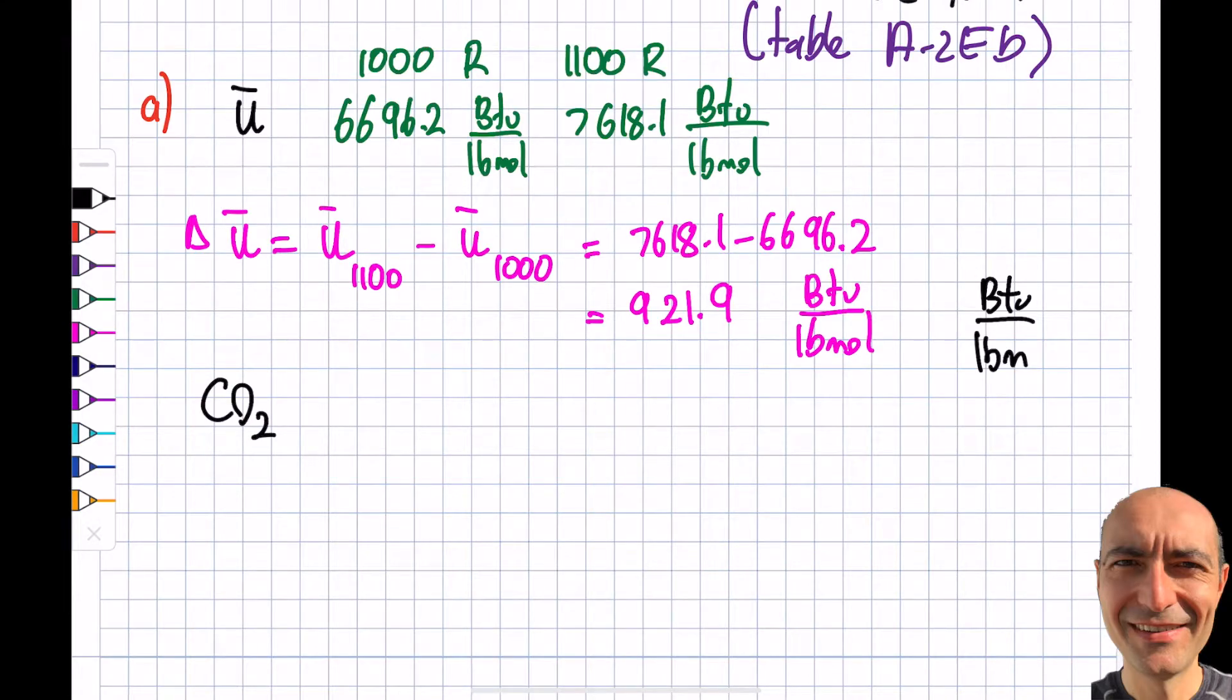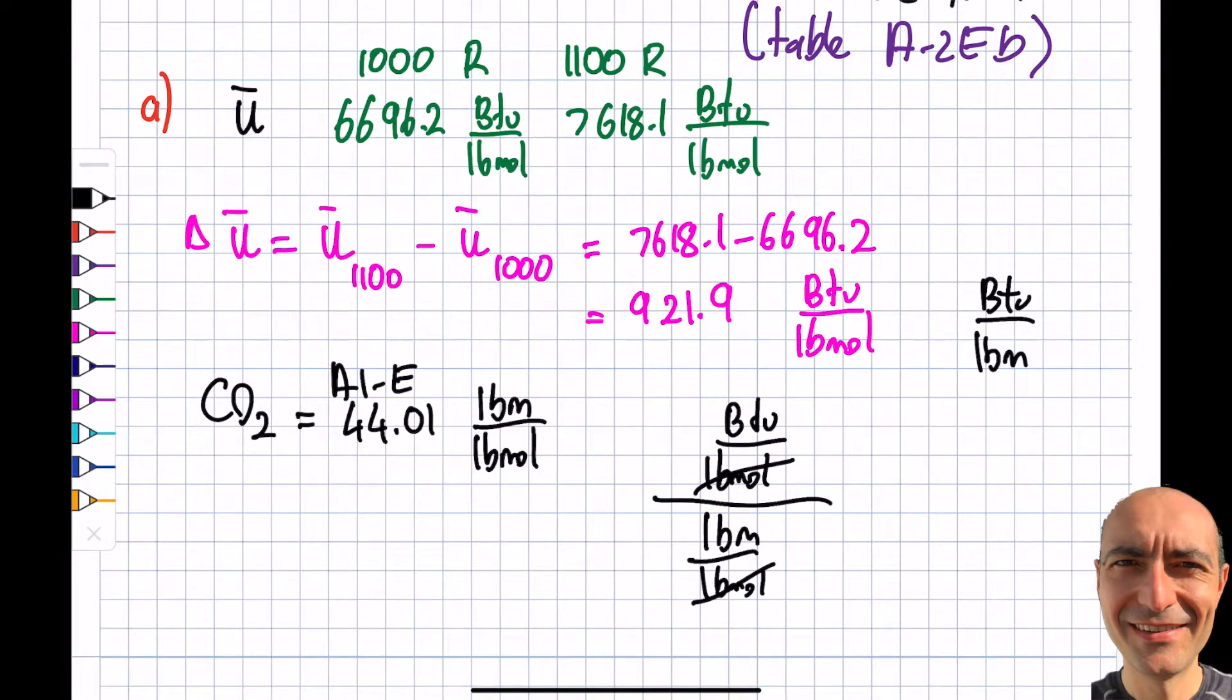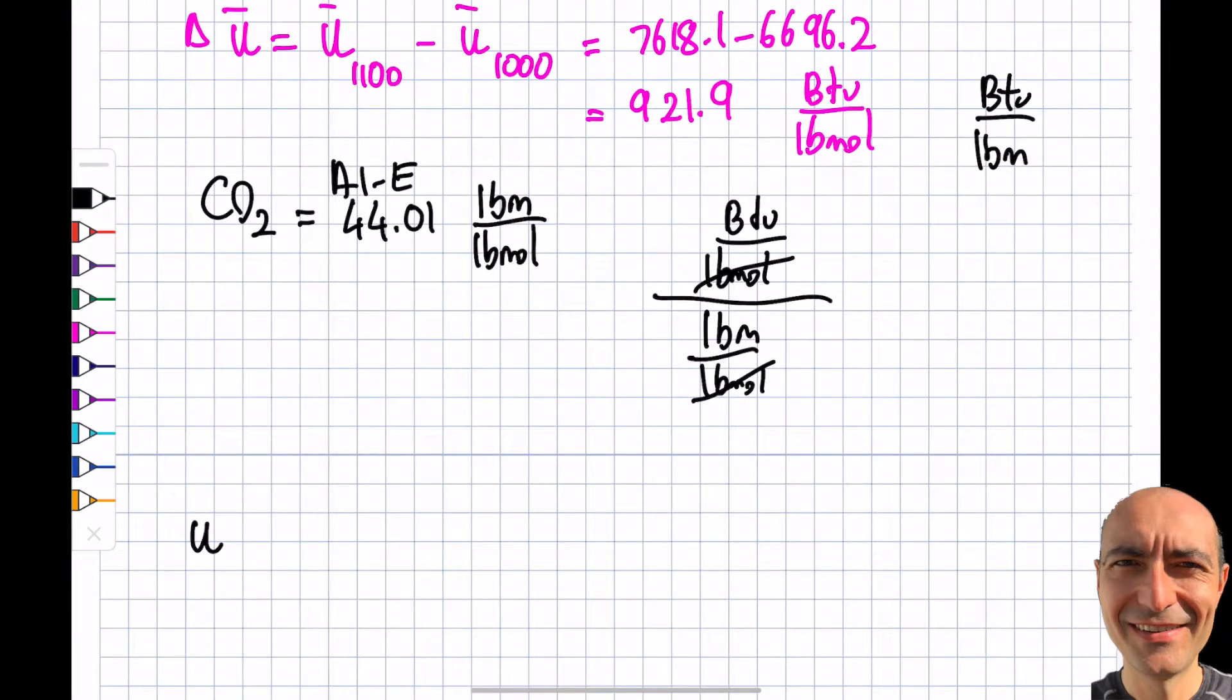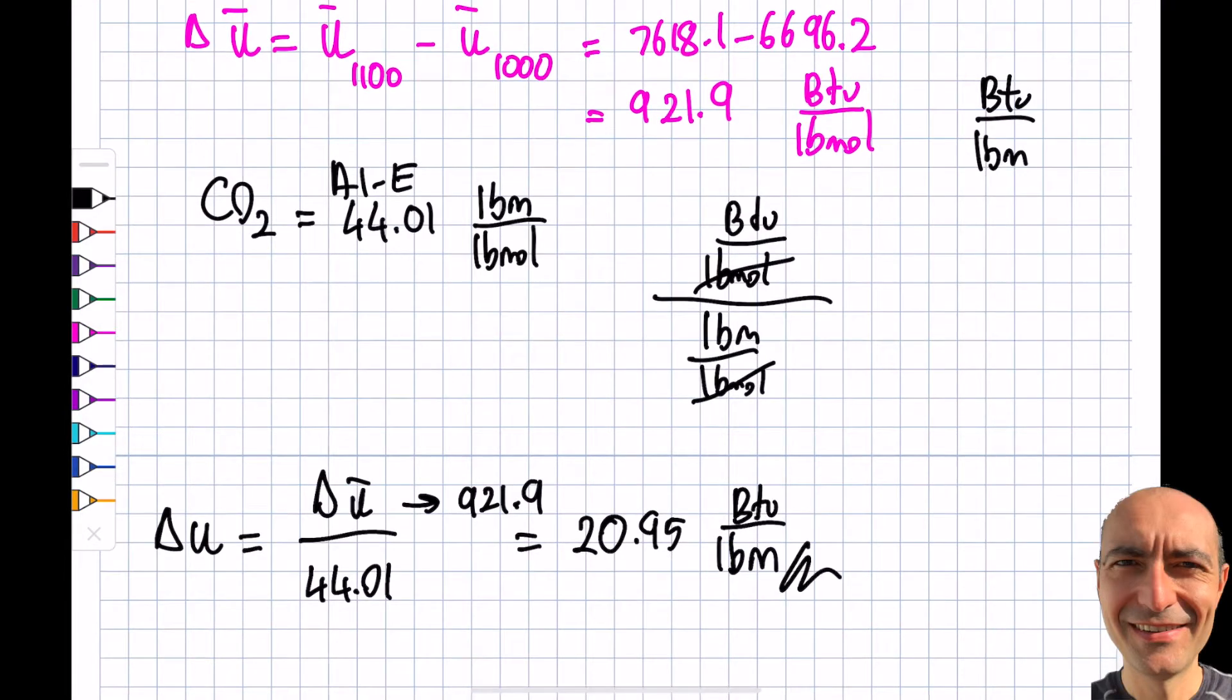So what I have to do is use the molecular weight of CO2. When I go to A-1E, or you may remember this - carbon molecular weight is 12, oxygen is 16 - so you get 44.01. It says 44.01 pound mass per pound mole. If I want to convert this BTU per pound mole, I divide by pound mass per pound mole, and I'll get BTU per pound mass. Delta u will be delta u bar divided by 44.01, which was 921.9, and I get 20.95 BTU per pound mass. This is the accurate answer for part A.